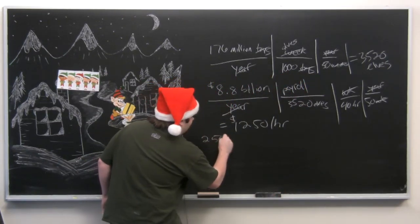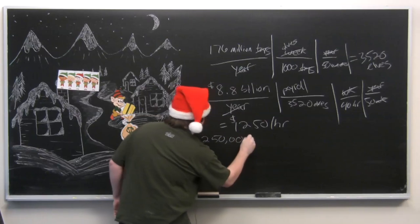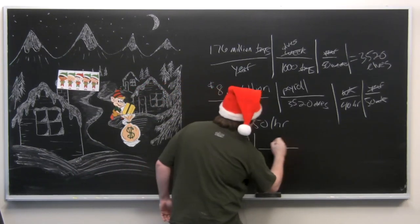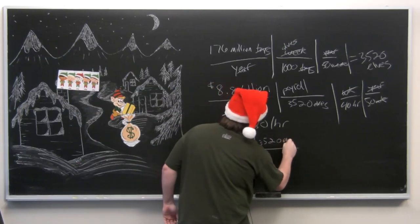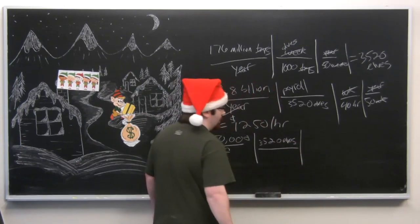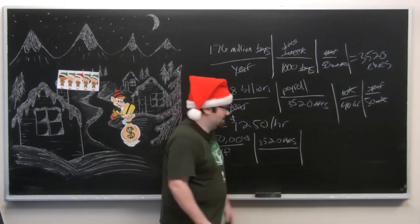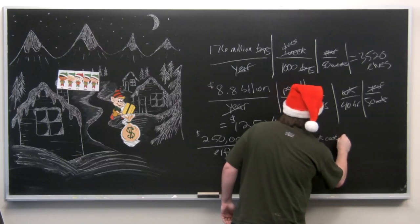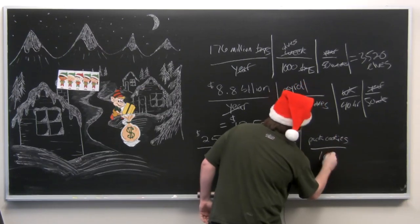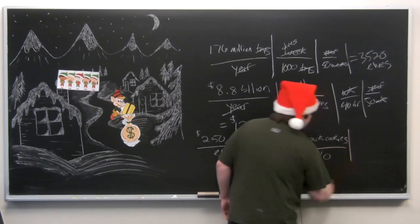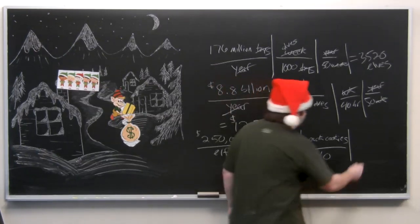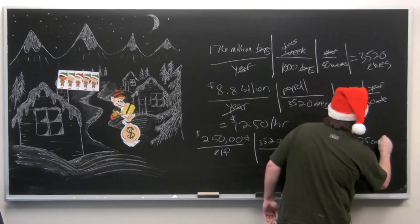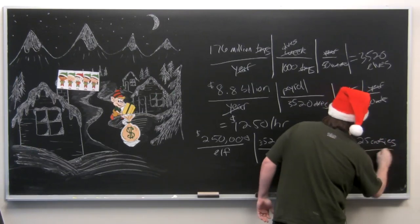So $250,000 per elf, and we have 3,520 elves, and let's say a pack of cookies costs $10. A pack of cookies, about $10, and 25 cookies a pack seems fair.